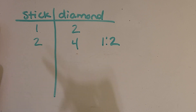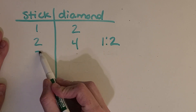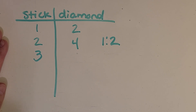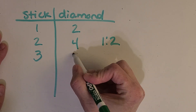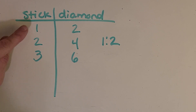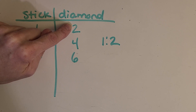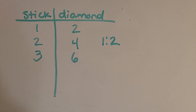What if I want to make three diamond swords? I would need three sticks. How many diamonds do I need? Yep, six. And I can look at a pattern here — I'm tripling, times three, from the original ratio.